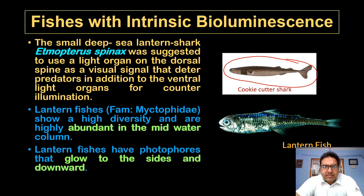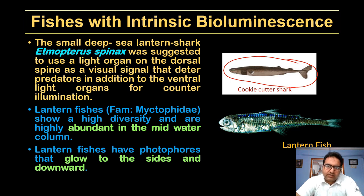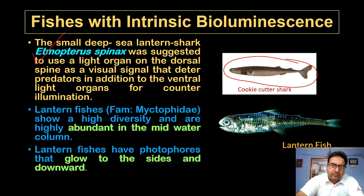The small deep sea lantern shark Etmopterus uses a light organ on the dorsal spine as a visual signal to deter predators, in addition to ventral light organs for counter-illumination.